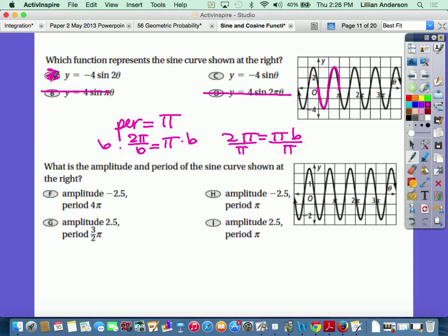Does anybody see how that works? And the last one. What is the amplitude and period of the sine curve shown at the right? Amplitude is always positive. So that should eliminate what two? F and h. And the g can go because 3 half isn't high. But it did not complete one full cycle in 3 over 2 pi. It actually completes one full cycle at pi. So my answer is pi.